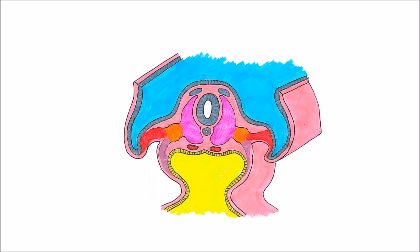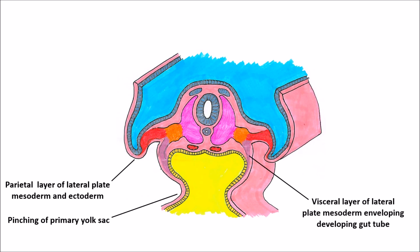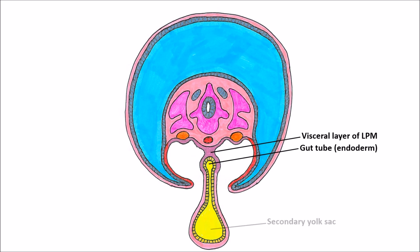As development proceeds, the split becomes very apparent between the two layers of lateral plate mesoderm and we wind up with an actual indentation. The parietal layer of lateral plate mesoderm is riding along with the ectoderm and starts moving inferiorly, wrapping around the remainder of the embryo. Meanwhile, the primary yolk sac gets pinched very tightly, leaving the visceral layer of lateral plate mesoderm enveloping what will become the gut tube. The gut tube becomes so pinched off that even though it's lined by endoderm and still connected by the visceral layer, its connection to the yolk sac becomes incredibly tenuous.